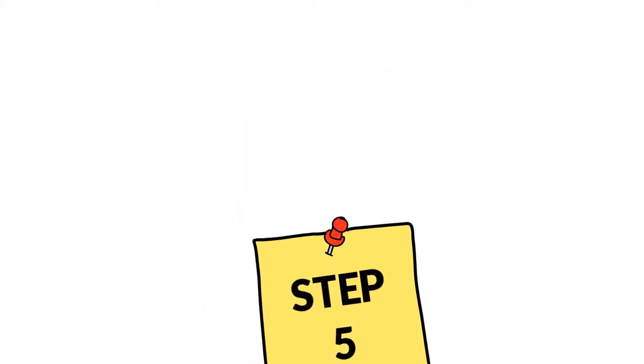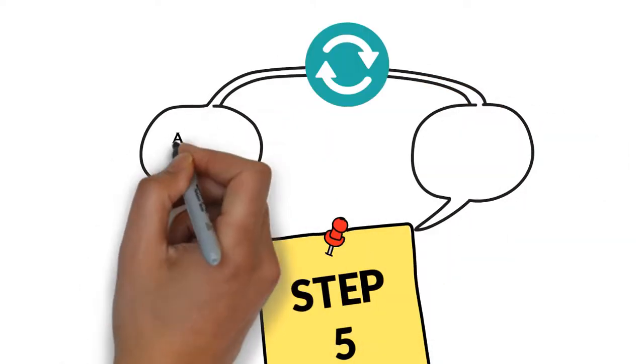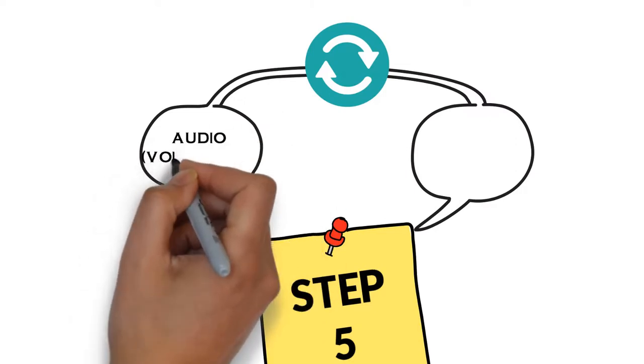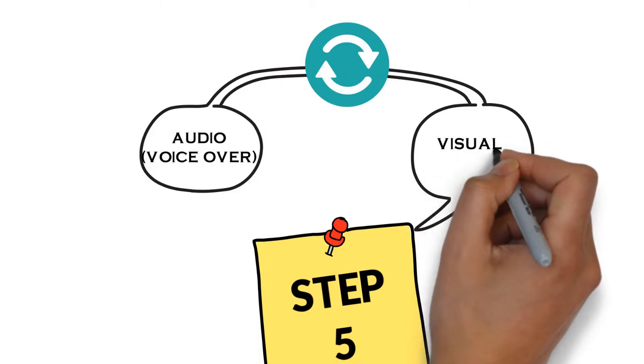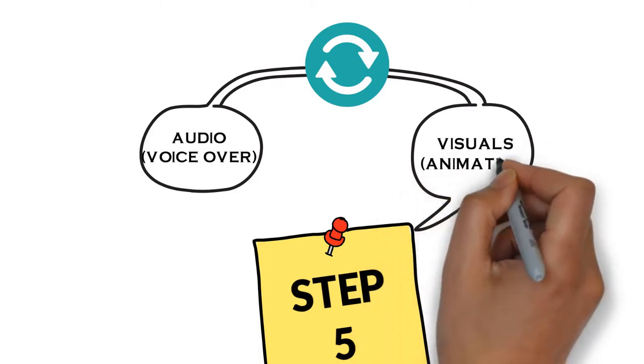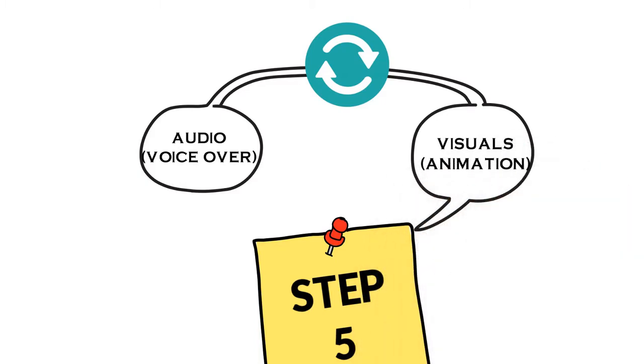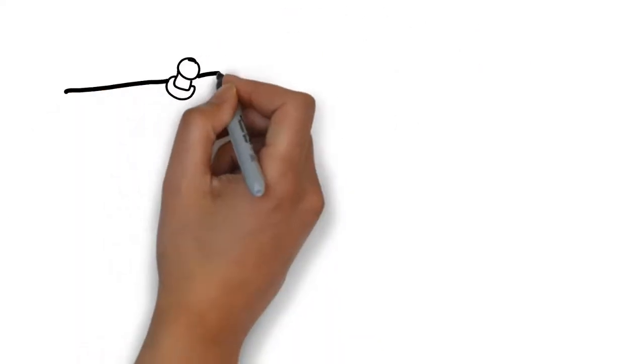After you have done all of this, the fifth step is to synchronize the voiceover and the animation you have created in video step four. To ensure that you have everything working, your audio and visuals need to rhyme together.